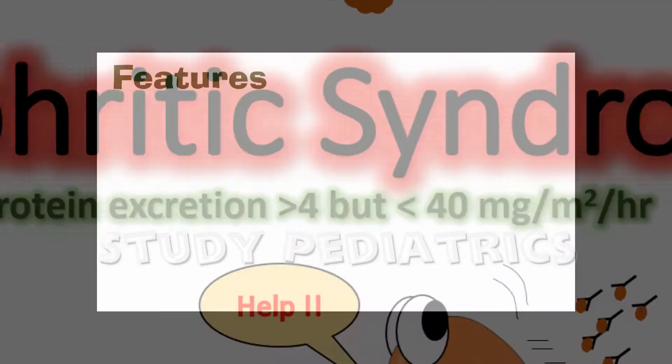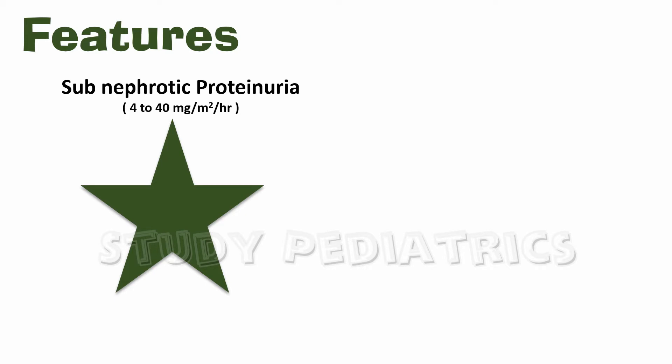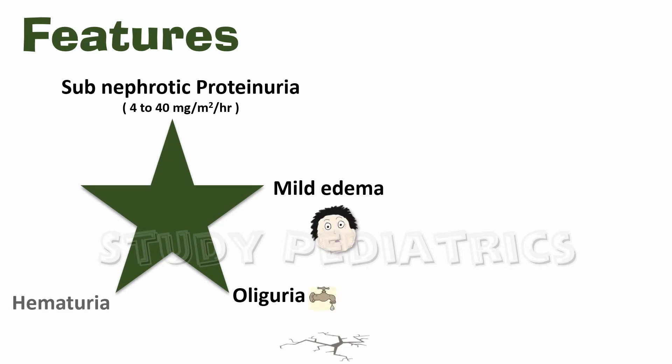Starting with general features, nephritic syndrome includes subnephrotic proteinuria, mild edema, oliguria, hematuria, and hypertension.